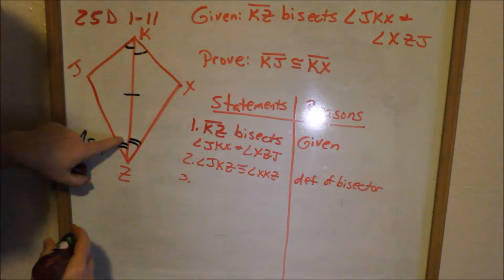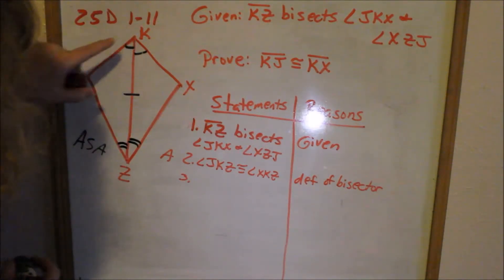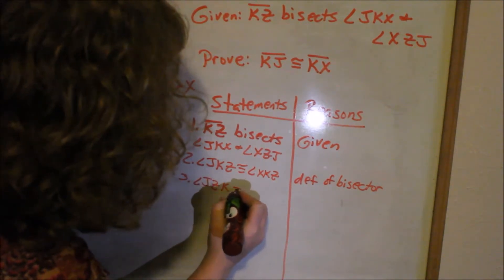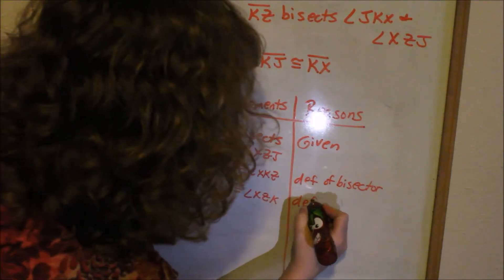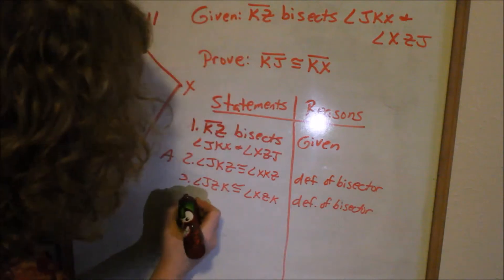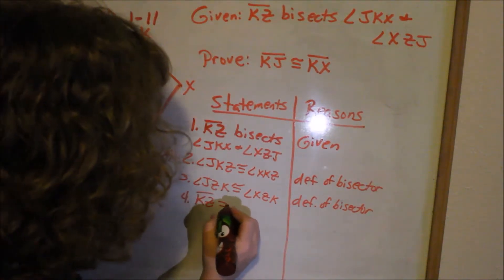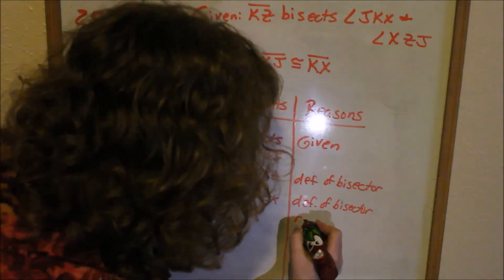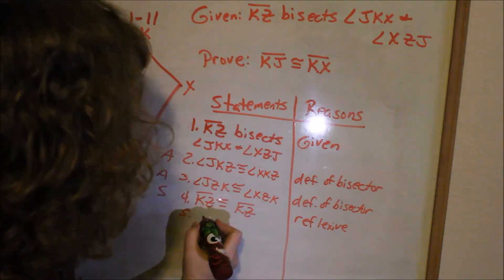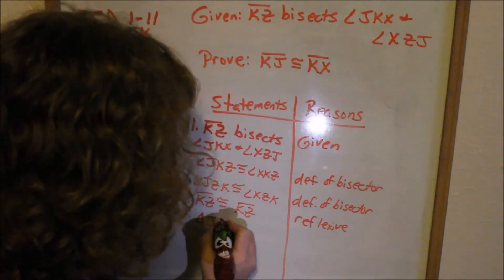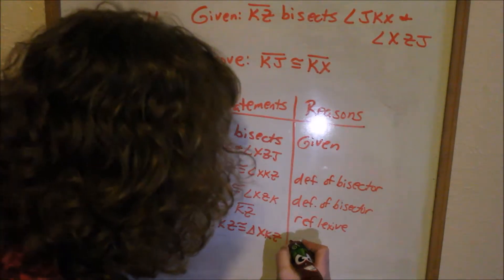Now I can make the statement for the bottom angles: angle JZK is congruent to angle XZK — definition of bisector. That's another angle. Now I need my side: line segment KZ is congruent to line segment KZ — reflexive property. That's my side. Now I can make the statement that triangle JKZ is congruent to triangle XKZ — angle-side-angle, ASA.